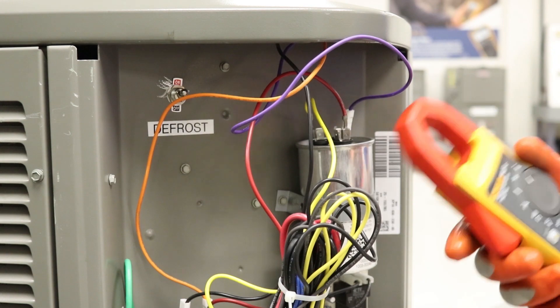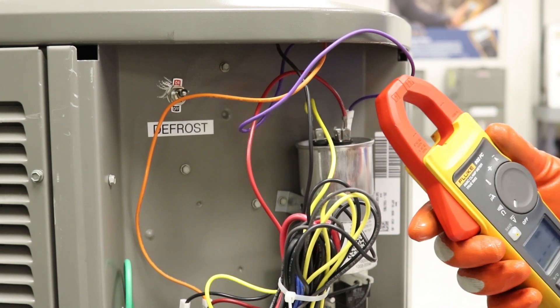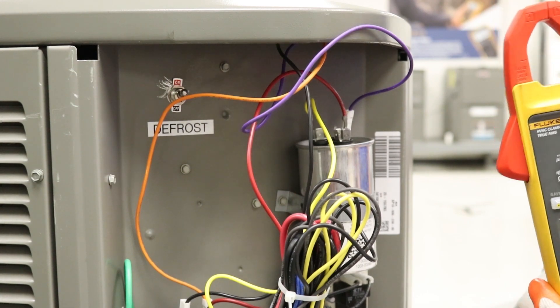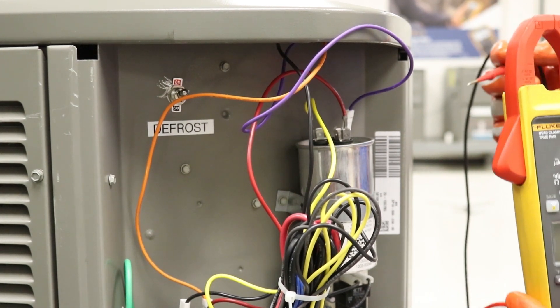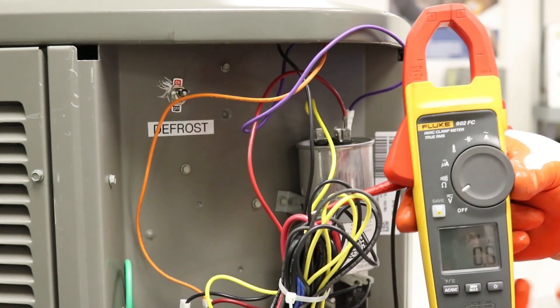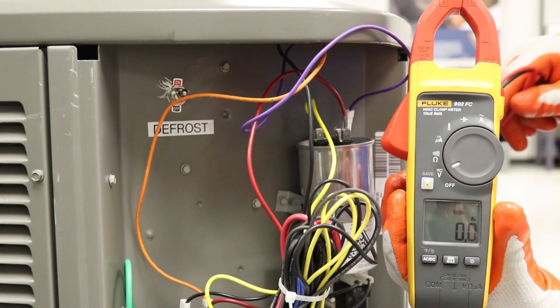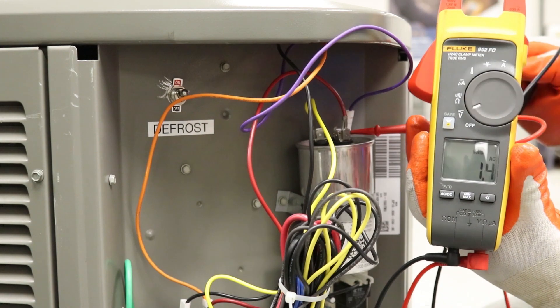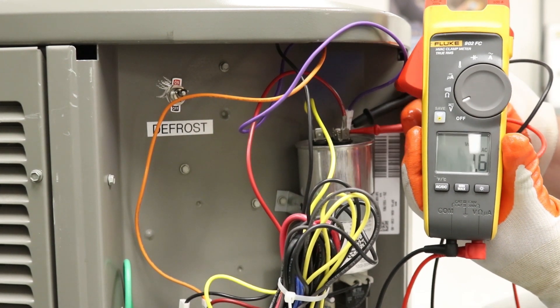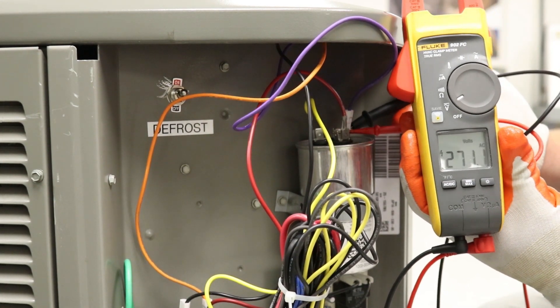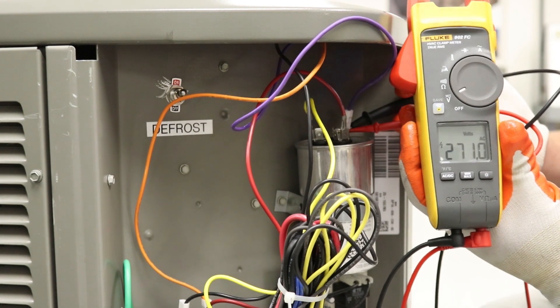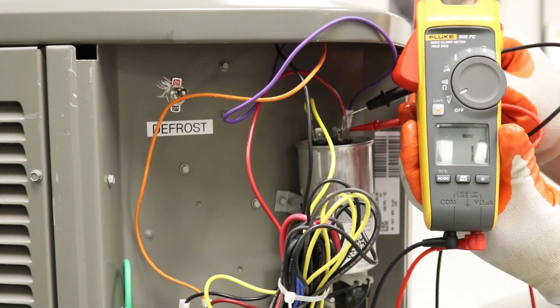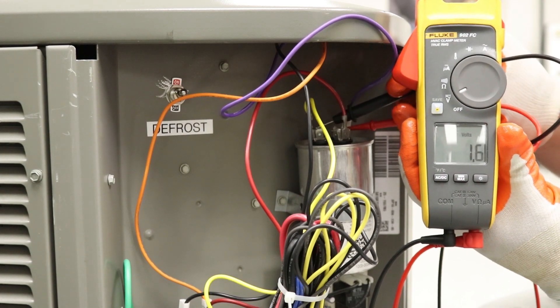From there, we're going to take our meter and switch it over to voltage. And we're going to check the voltage across both of those terminals to common. So we're going to start first with our fan terminal, which is reading 271.0 volts. Again, write that number down.